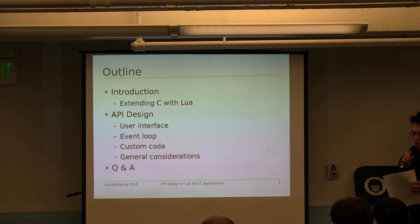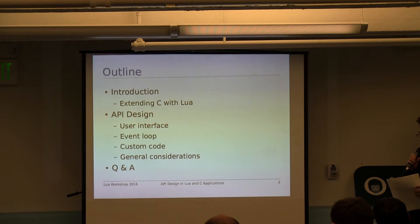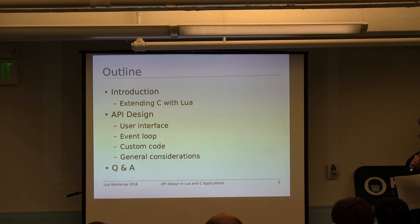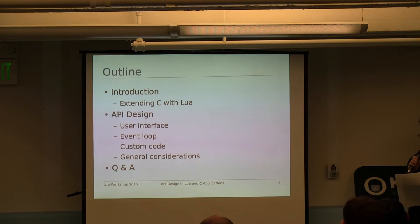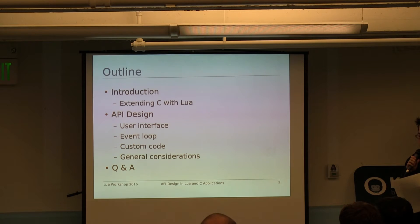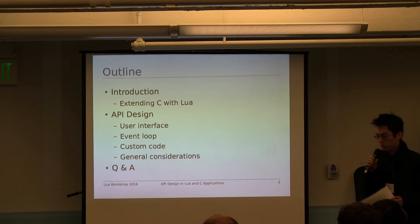In this talk, first I'm going to give you a brief overview of how to extend a C application using Lua so that we're all on the same page. Then I'm going to briefly describe TextAdept and the C internals that it exposes to Lua so that I can start talking about API design in general with Lua and C applications. When it comes to API design, I'm going to go over how to connect Lua to user interface elements, how to enable Lua to take advantage of the application's event loop, how to run custom Lua scripts from C, and then I'll finish off with some other generic considerations with API design. After all this, I'll have some time for some Q&A.